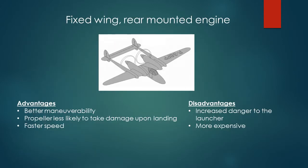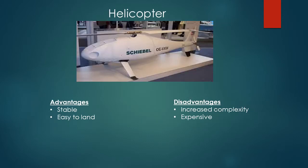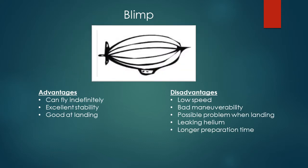Hi, I'm Jia Long. Now I'm going to talk about the fixed wing rear mounted engine. For advantages, it has better maneuverability and the propeller is less likely to take damage upon landing, and it has faster speed. For disadvantages, it increases danger to the launcher and is more expensive in cost. For the helicopter, the advantage is that it is stable and easy to land. Disadvantages are increased complexity and expense. For the blimp, it can fly indefinitely, has excellent stability, and is good at landing. Disadvantages include low speed, bad maneuverability, possible problems when landing, leaking helium, and longer preparation time.